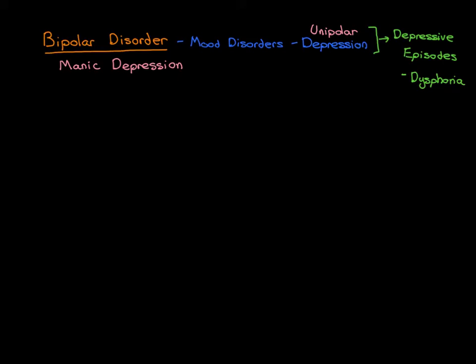In addition to low mood, it's also very importantly low energy — and the word for low energy is anergia. 'An' means no, 'ergia' pertains to energy levels. So in a depressive episode you have a long period of time where both your mood and your energy level are low. Mood is how happy and content you are with life — you'll be continuously sad and potentially angry and irritable.